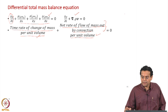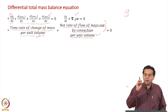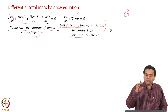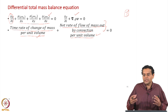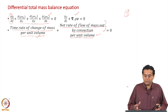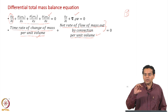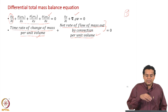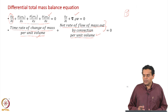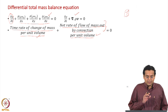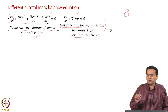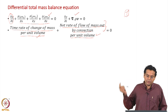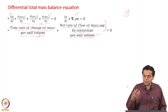To visualize this, imagine a very small cuboidal control volume. Per unit volume of that region: what is the time rate of change of mass, and what is the net mass flow leaving by convection? All terms in the differential mass balance equation are on a per unit volume basis, and this is universal across all differential balance equations.